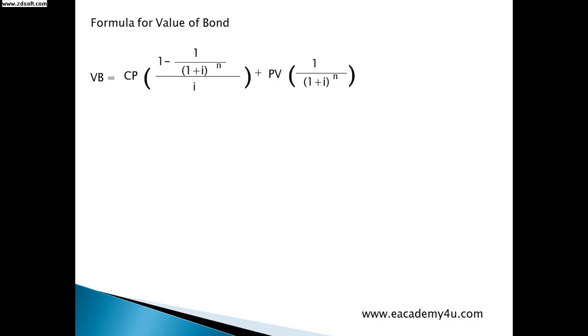This is the formula for value of bond. The VB is the value of bond equals to CP which is coupon price. And then we open the bracket and 1 minus 1 over 1 plus i. i is the interest rate and n is the number of years or number of payments and over i interest rate. And we close the bracket and then plus present value of the bond and then we open the bracket and 1 over 1 plus i power to n.